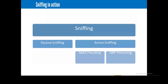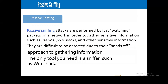So what is sniffing? We have two types of sniffing: passive sniffing and active sniffing. Under active sniffing, we have MAC flooding and ARP flooding. Passive sniffing attacks are performed by just watching packets on a network in order to gather sensitive information, such as user IDs, passwords, and other sensitive information.